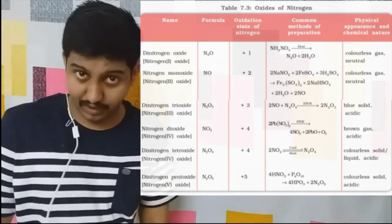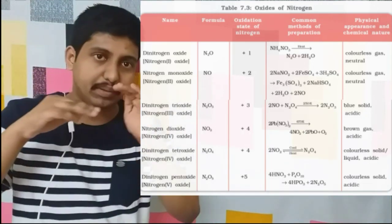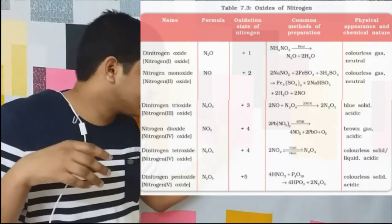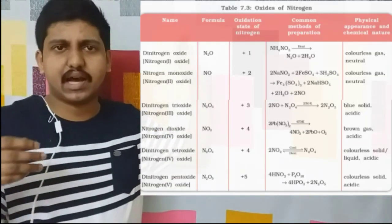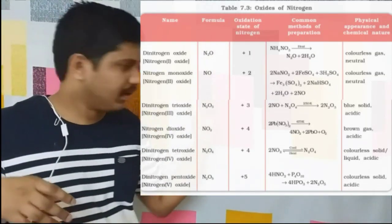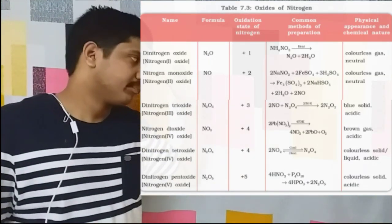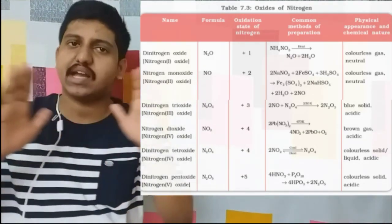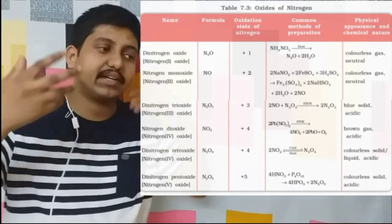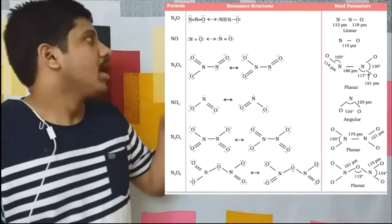Preparation of N2O5: the reaction to note is HNO3 plus P4O10. It is a special reaction. All others are very easy to remember; this reaction alone you have to study and keep. HNO3 plus P4O10 gives our N2O5. Now next table — regarding the bond angles and the resonating structures.